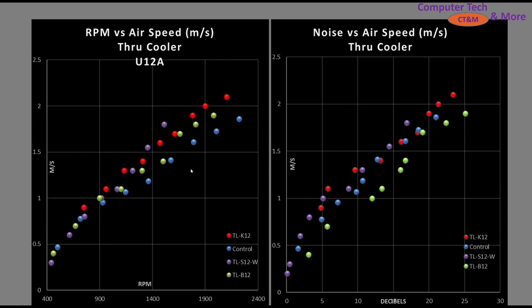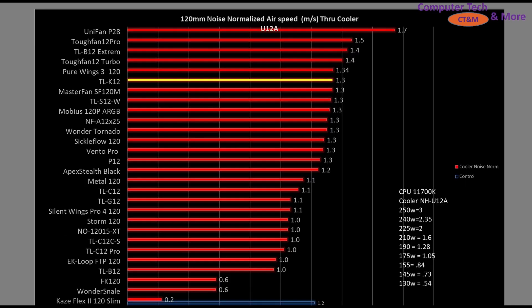On the right graph—decibels versus airspeed—the TLK12 sits above the majority of fans until higher RPM airspeeds, where it shifts down and lines up more closely with the control fan. Overall, a very good result.